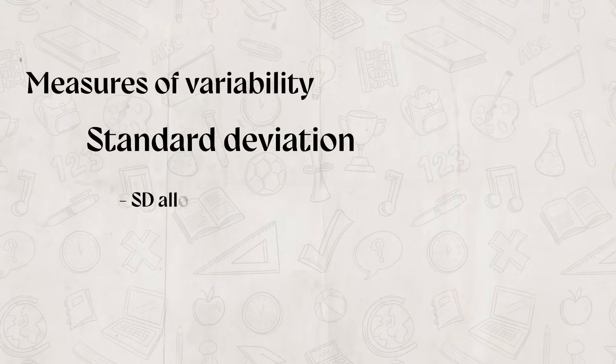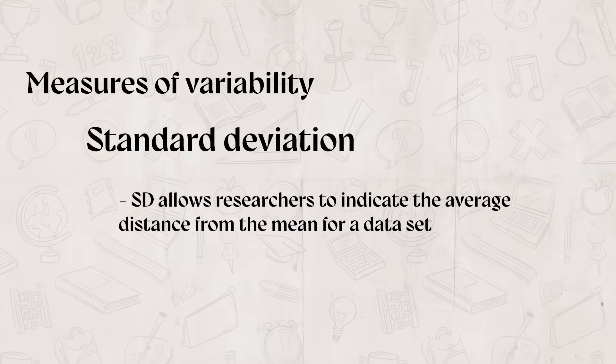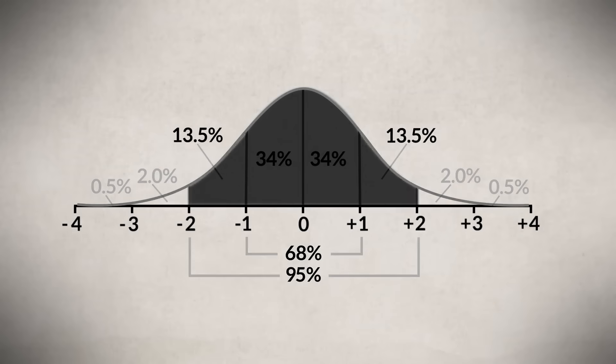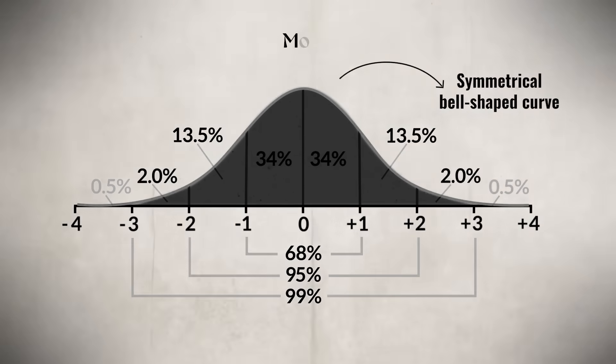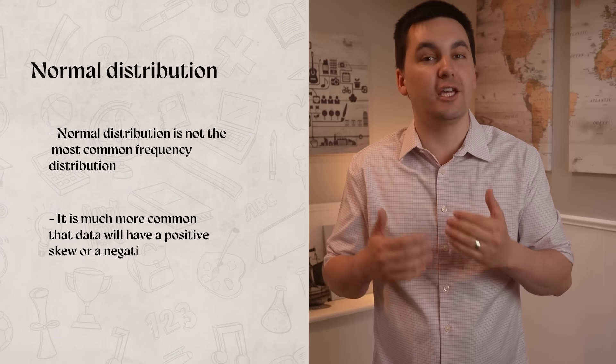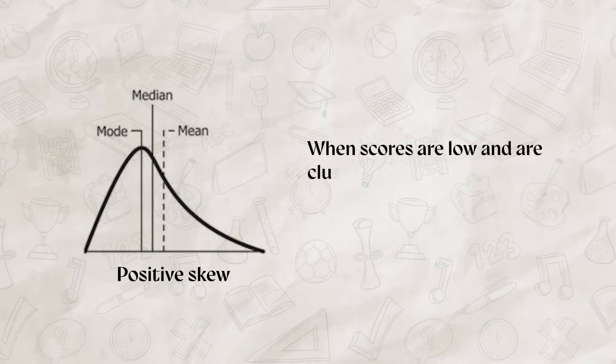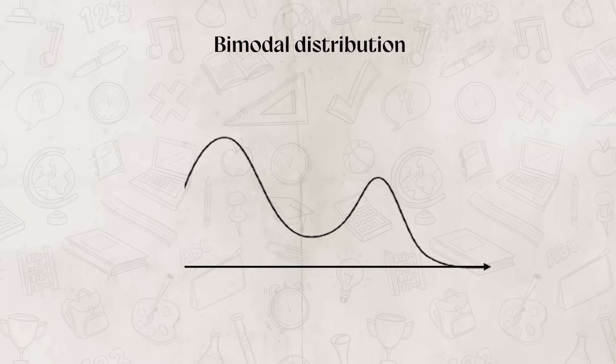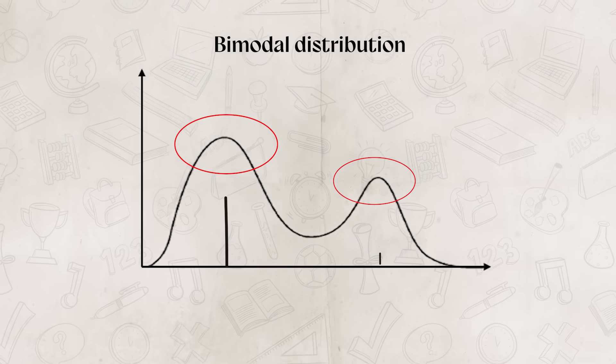Standard deviation, on the other hand, allows researchers to indicate the average distance from the mean for a data set. For AP psychology, you do not have to worry about calculating the standard deviation, but be familiar with the different distributions that can occur. Sometimes you may see a normal distribution, which takes the shape with a symmetrical bell-shaped curve. When this happens, it means there is just one mode, and the mean, median, and mode are all located at the center of the distribution. Now, when looking at distributions, we can see that a normal distribution is not the most common frequency distribution. It's much more common that data will have a positive or negative skew. A positive skew occurs when scores are low and clustered to the left of the mean, while a negative skew has high scores that are clustered to the right of the mean. You also might see a bimodal distribution, which is when distribution has two modes, causing the distribution to have two peaks.